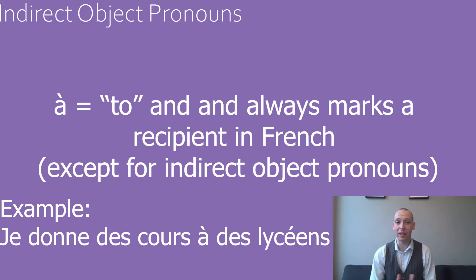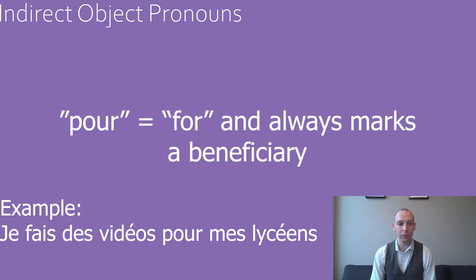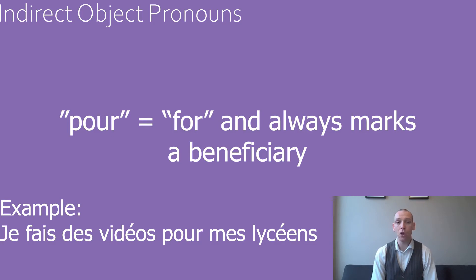To use the same example as before, I give lessons to high school students would be Je donne des cours à des lycéens. Similarly, the word pour is the French equivalent to for and is used to introduce a beneficiary. Je fais des vidéos pour mes lycéens — I make videos for my high school students.